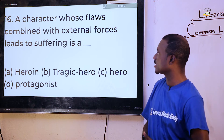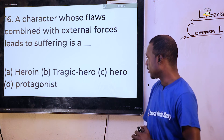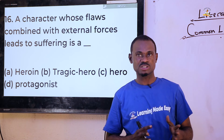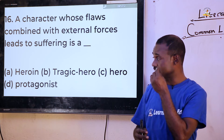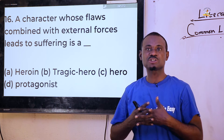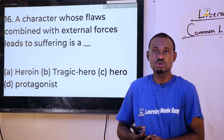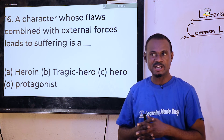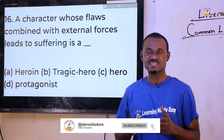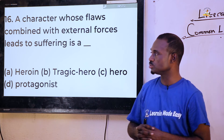Question sixteen: 'A character whose flaws combined with external forces leads to suffering is a dash.' Options are heroine, tragic hero, hero, and protagonist. The answer is not protagonist, not hero, not heroine. The answer is option B — tragic hero. A tragic hero is a type of hero in tragedy whose flaws lead to his downfall, and because of external forces, he is destined to suffer, whether by death or capture.